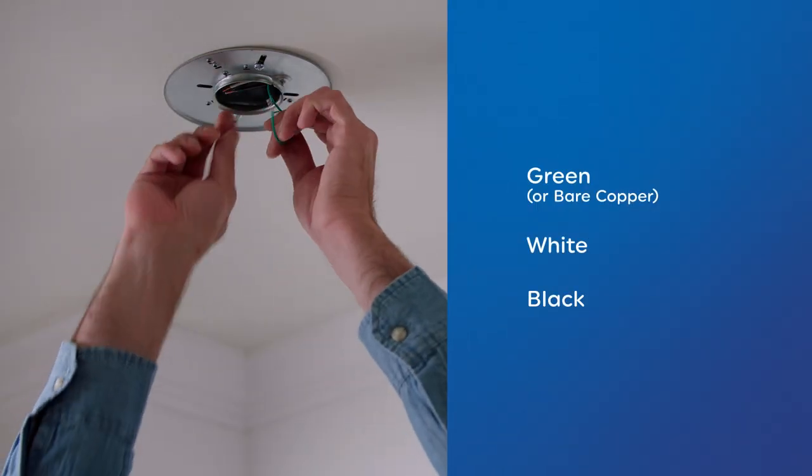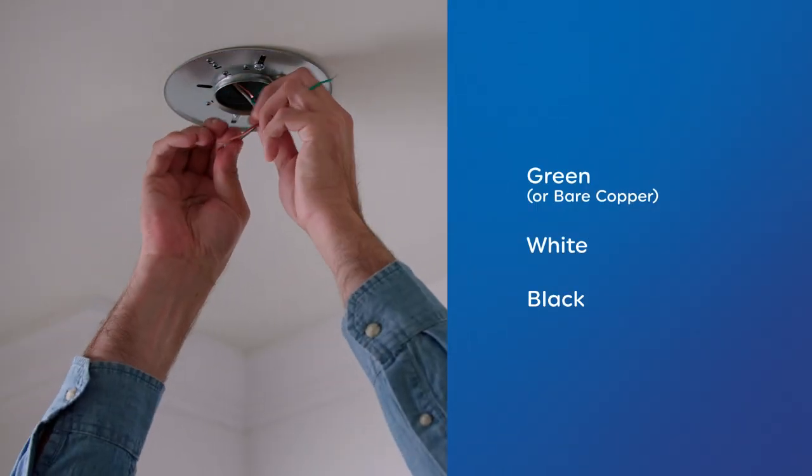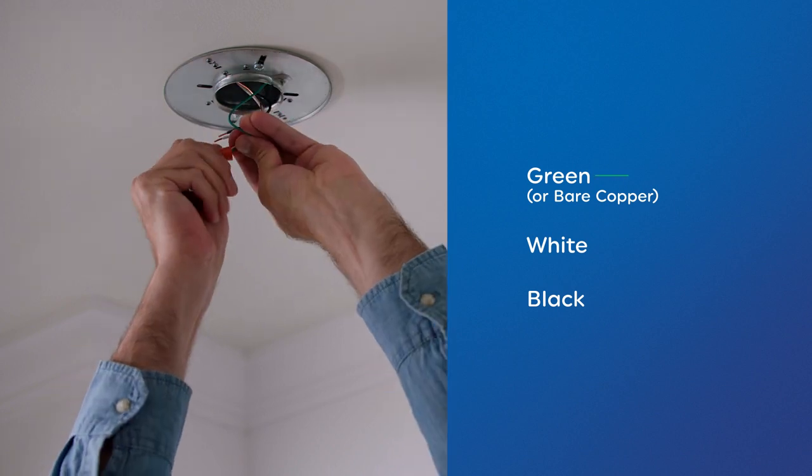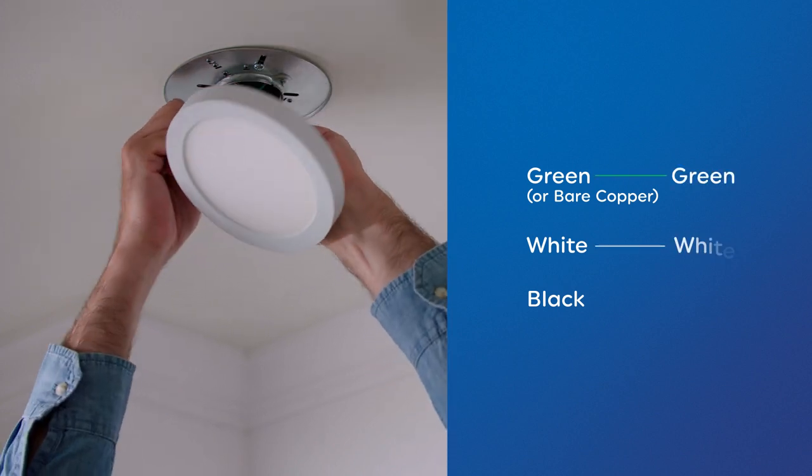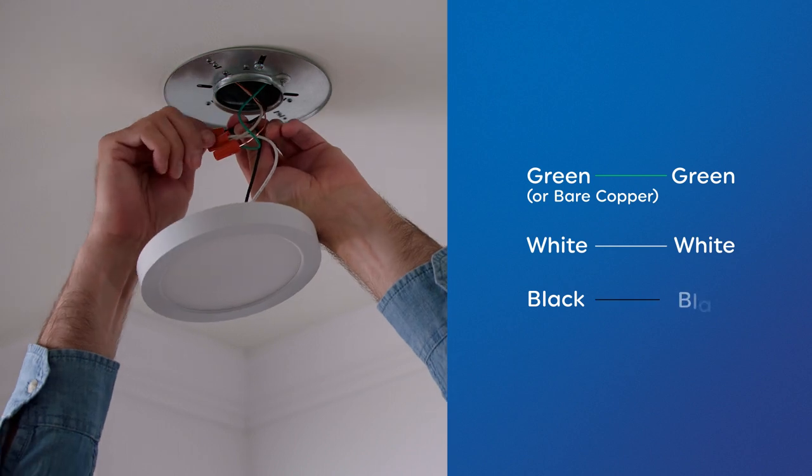Now connect the fixture wires to the corresponding wires in the junction box and secure with wire nuts. Cap the green and bare copper wires. Connect the neutral white wire to white, and the black line wire to black.